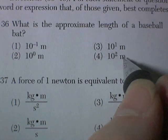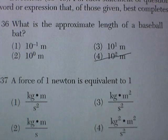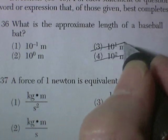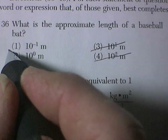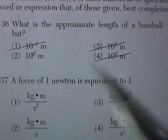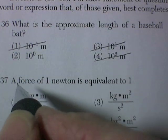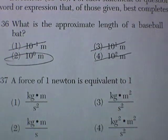Let's start here. 10 to the second would be 100. 10 to the first would be 10. 10 to the negative 1 would be a tenth of a meter. And 10 to the zero would be 1 meter. Baseball bat, approximately 1 meter.